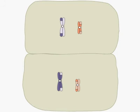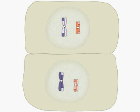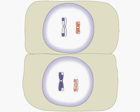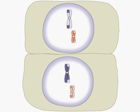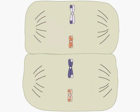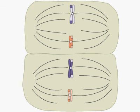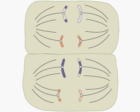Meiosis I results in two cells. Meiosis II is similar to mitosis. The pairs of sister chromatids line up at the equatorial plane. The sister chromatids separate as they are pulled toward opposite poles.